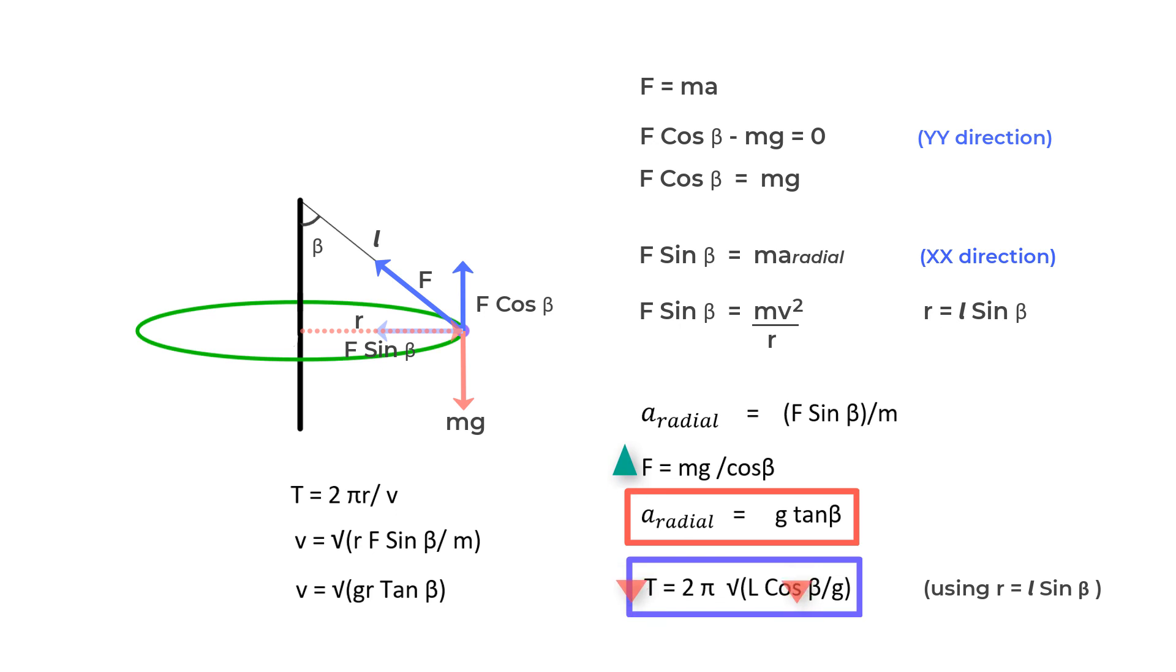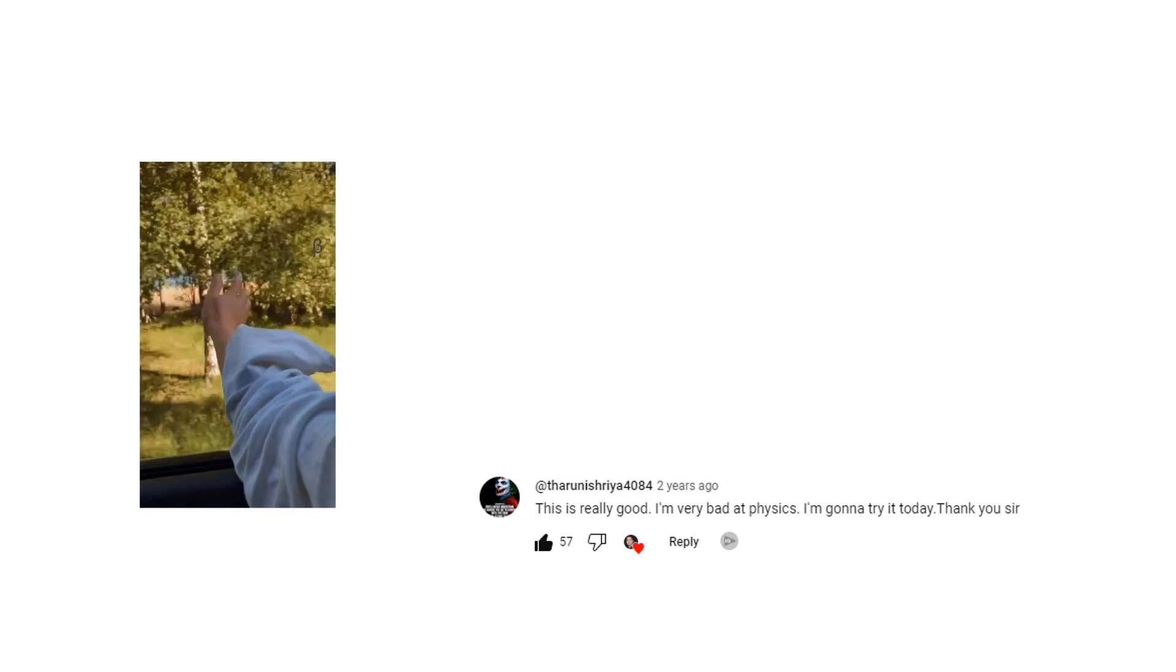However, the angle can never be 90 degrees because then T would become zero and F would become infinity and V would also become infinity. So, you could say that a conical pendulum could never make a very good clock because the period depends on the angle beta in a very direct way.